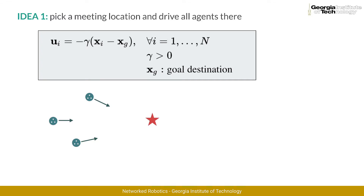The question we want to answer now is: what should the velocity of each robot be for all the robots' positions to have the same value? We pick a location in the plane and look for a control law that would move each robot to this location. We suggest that the velocity of each robot should be proportional to the distance between the position of the robot itself, xi, and the common goal, xj.